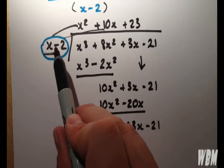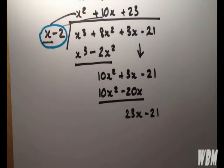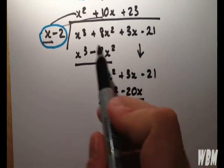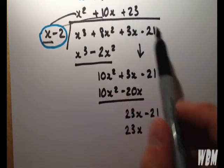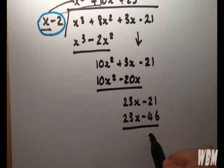And we multiply it out again. So we have 23 times by x minus 2, which gives us 23x. Now, 2 times 23 minus 46. And we do another substitution here. And that leaves us with 25.